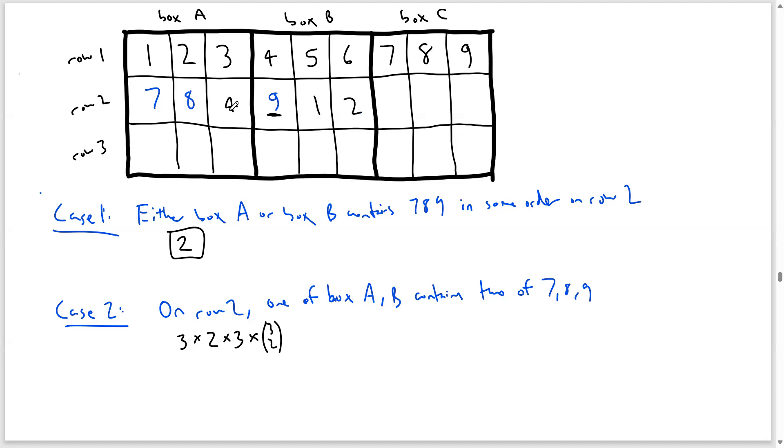Now it turns out once I've done this, these actions will uniquely determine the rest of the rows in each box. This means that the number of ways where case 2 applies is 3 times 2 times 3 times 3 choose 2, which is 54.